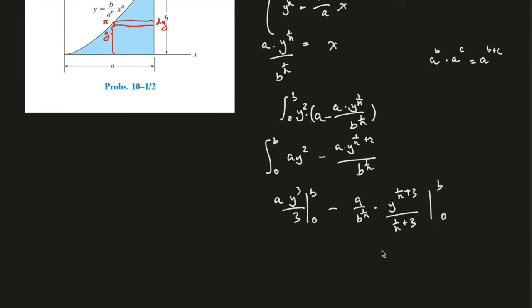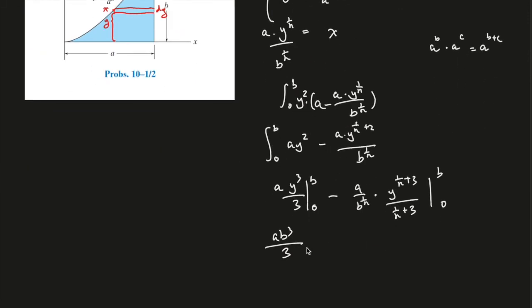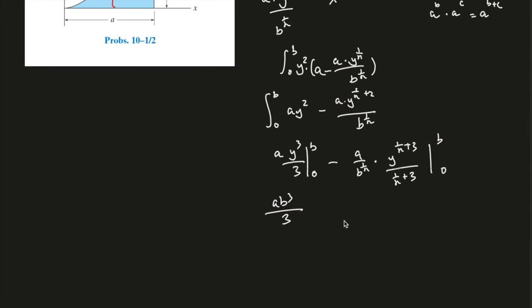And this is from b to 0. So let's work over here real quick. ab^3 over 3, right, plug the b in here, we're doing the integral in terms of dy over here. So plug b in, this gives you this minus a times a over b to the power of 1 over n plus b to the power of 1 over n plus 3 over 1 over n plus 3.